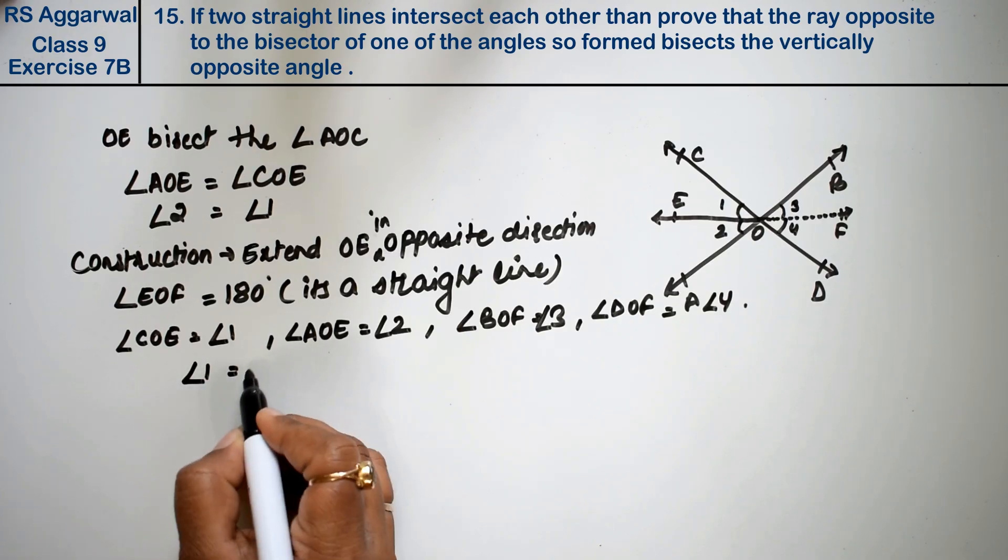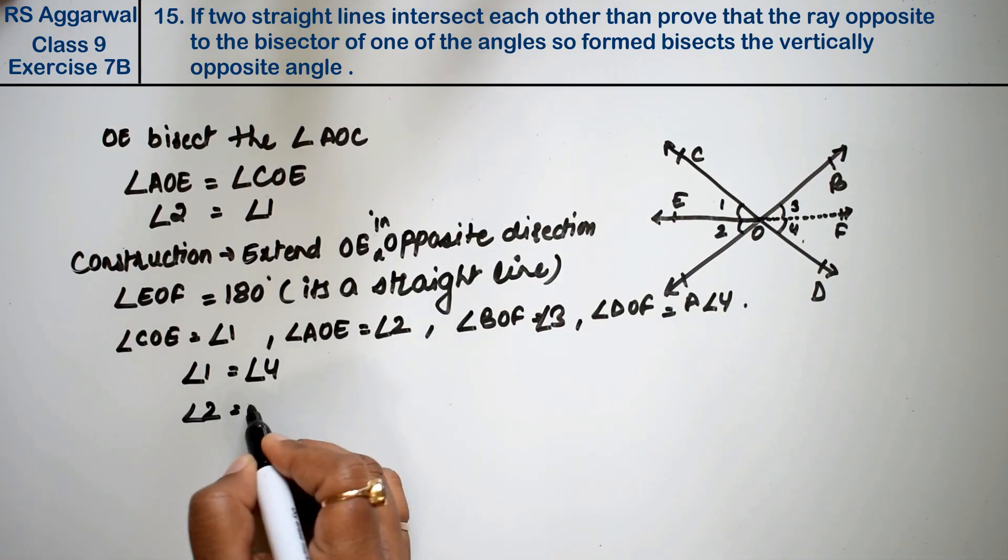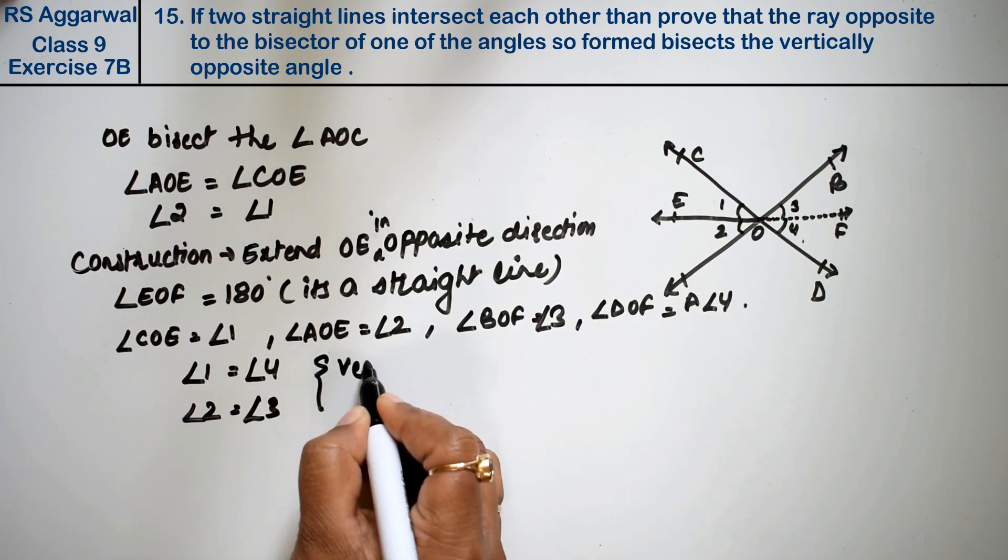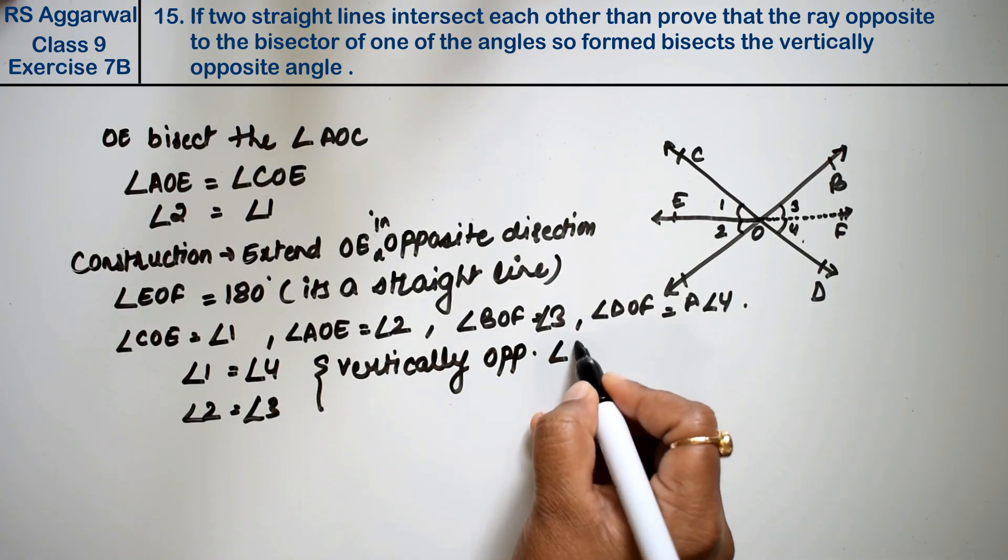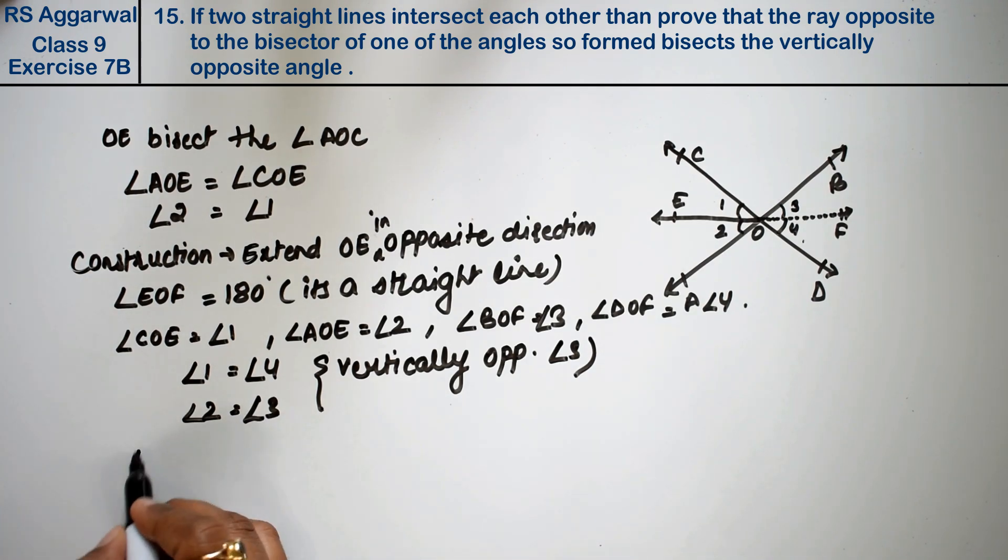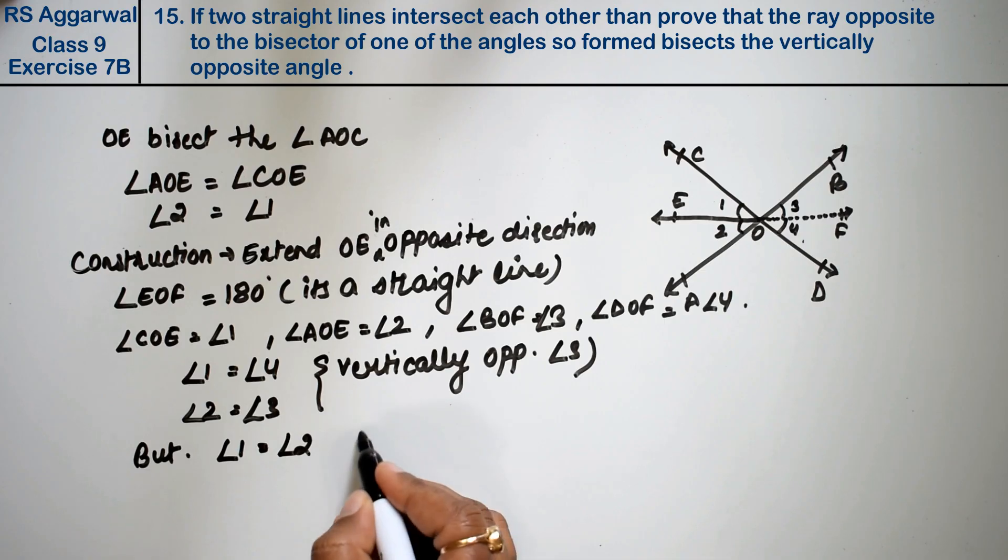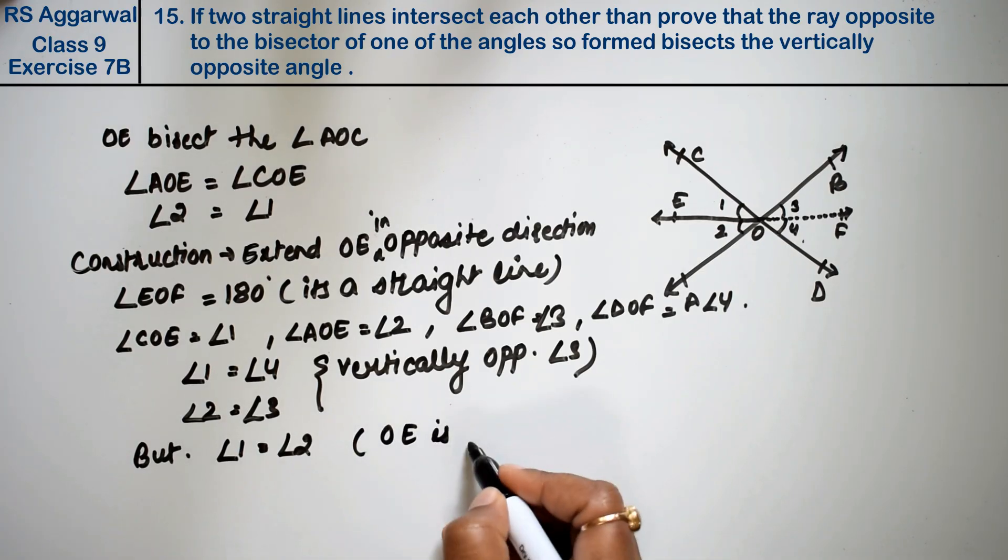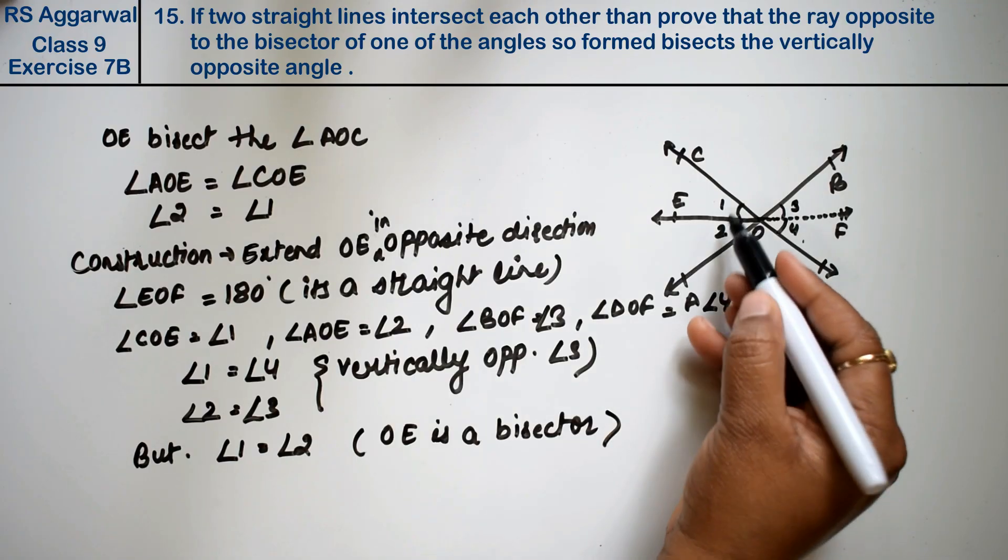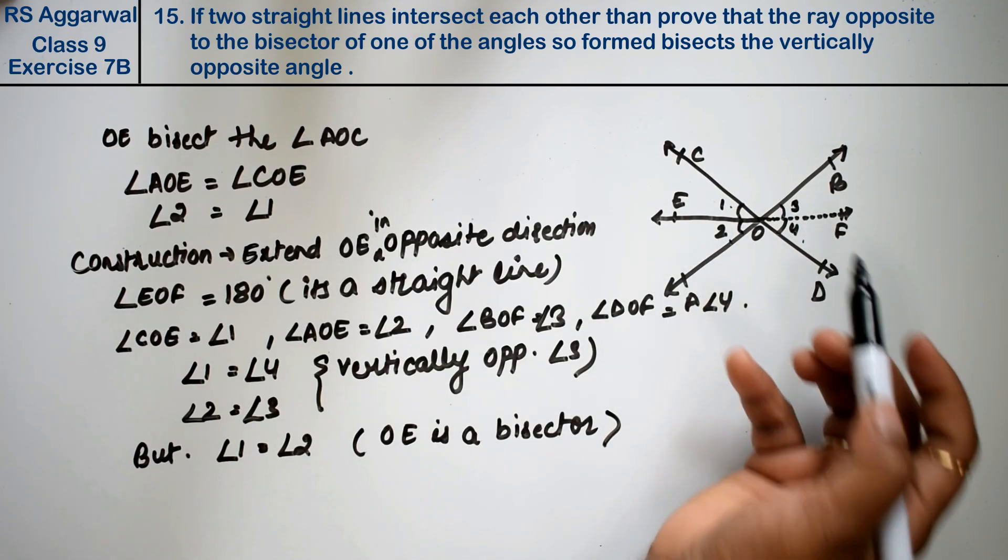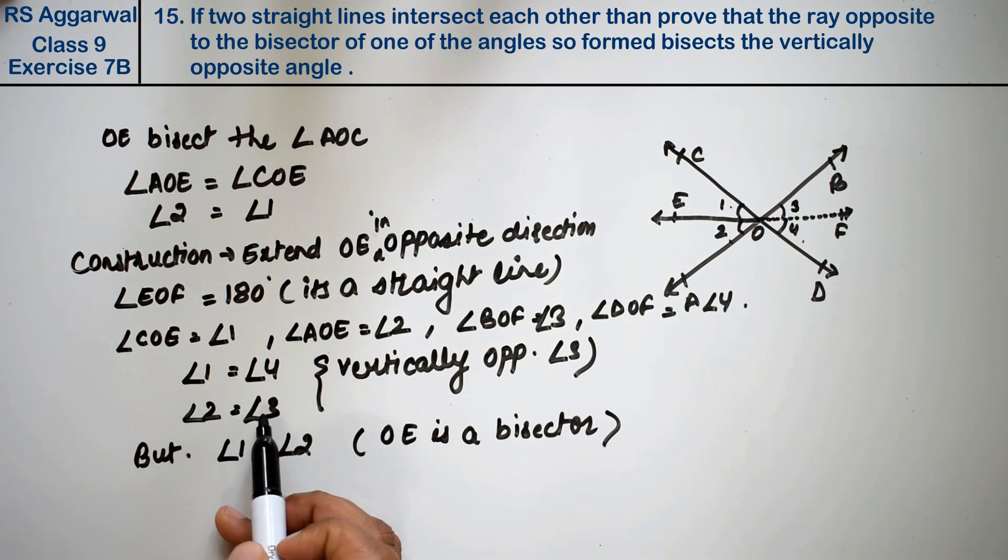Now angle 1 equals angle 4. And similarly, angle 2 equals angle 3. Angle 1 is equal to angle 2 because OE is the bisector. OE is the bisector. And angle 2 equals angle 3, right? Angle 1 equals angle 4, and angle 2 equals angle 3.